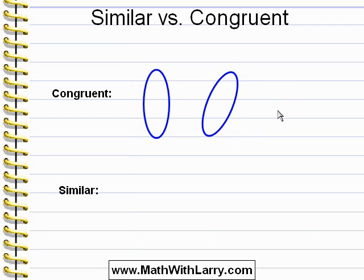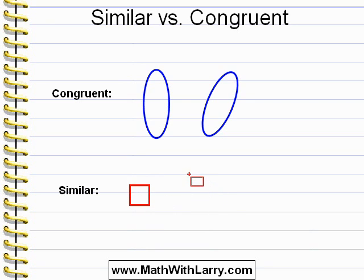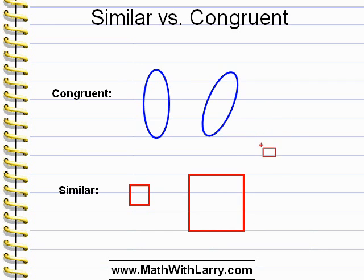Now in math, we also have a concept of similar. In everyday life, we use the word similar in different ways, and it might mean different things to different people — it's kind of vague. In math, though, it has a special definition. I'm going to make a small square, and then I'm going to make a larger square. We can say that these two shapes are similar: they're the exact same shape but different sizes, and in math we call that similar.